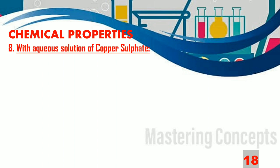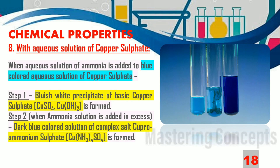Let us now find out what change occurs when ammonia is reacted with aqueous copper sulphate. When aqueous ammonia is added to the blue-coloured aqueous solution of copper sulphate, at first a bluish white precipitate of basic copper sulphate is formed. On further adding ammonia solution, a dark blue coloured solution of the complex salt cuproammonium sulphate is formed.